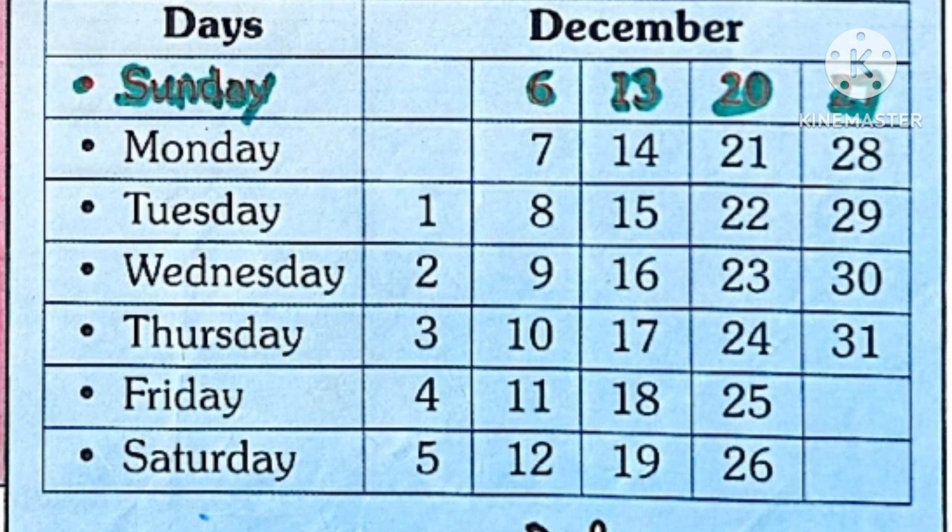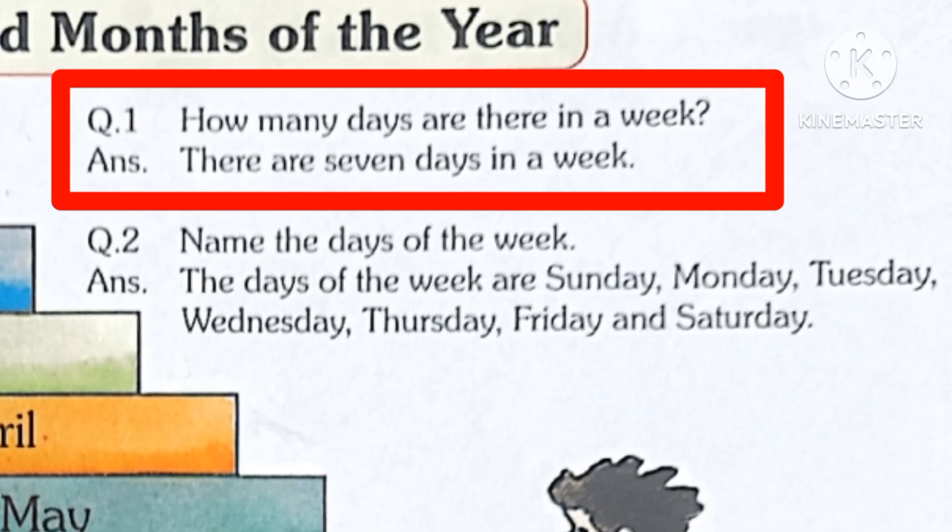How many days are there in a week? There are seven days in a week. Very good.